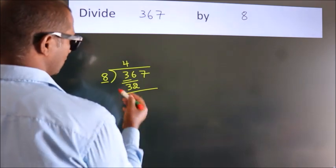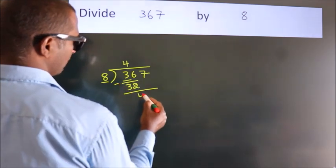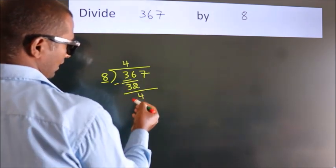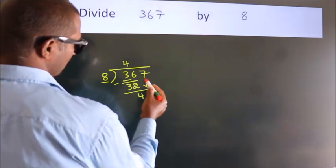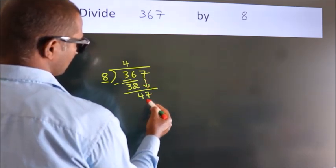Now we should subtract; we get 4. After this, bring down the beside number. So 7 down, so 47.